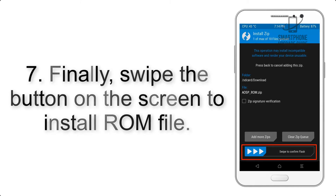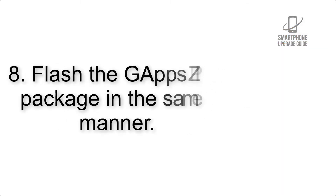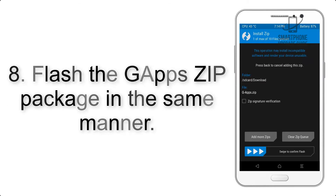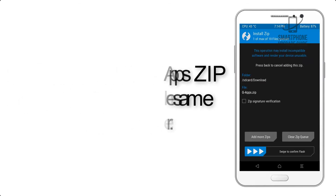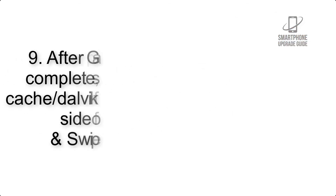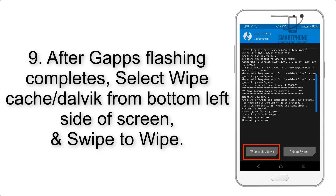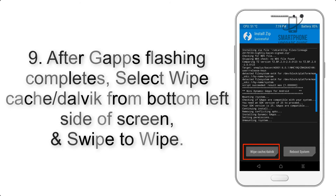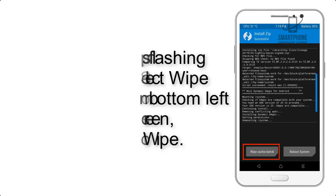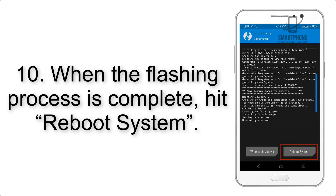Step 7: Swipe the button on the screen to install the ROM file. Step 8: Flash the GApps zip package in the same manner. Step 9: After GApps flashing completes, select Wipe Cache and Dalvik from the bottom left side of the screen and swipe to wipe.